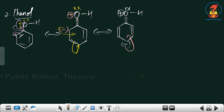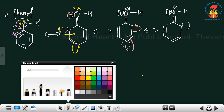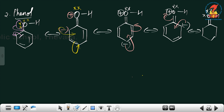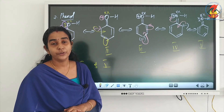This process continues: the negative charge shifts to adjacent positions and the pi bond moves to the corner, with the ring unchanged each time. Finally, the negative charge goes back to oxygen, which regains two lone pairs. So phenol also has 5 resonating structures, and structures 1 and 5 are the same, differing only in position of double bonds.